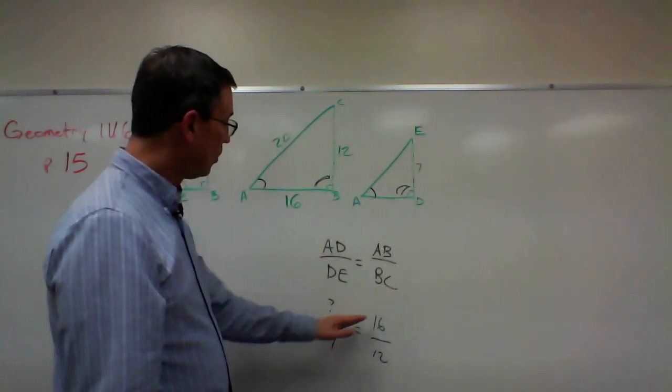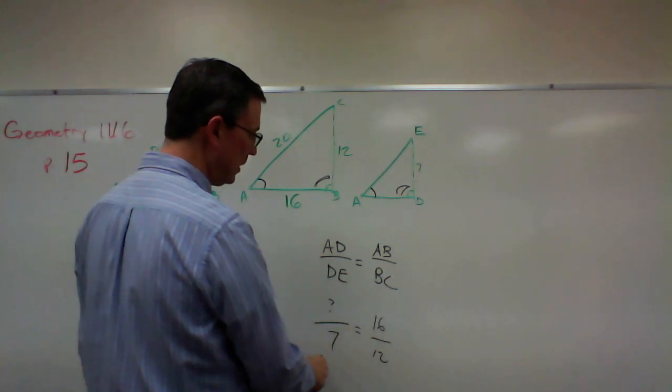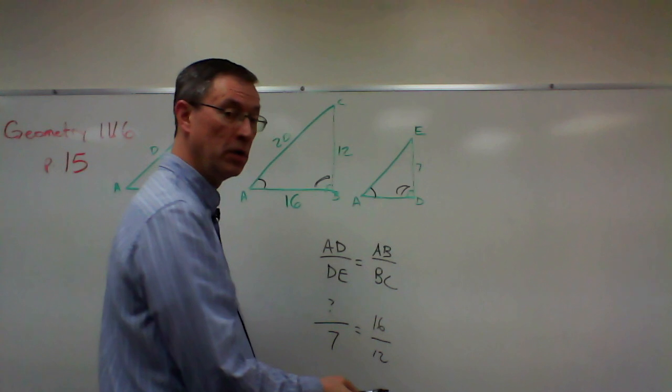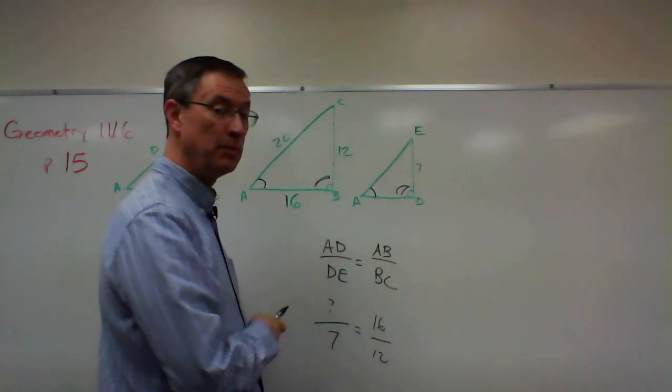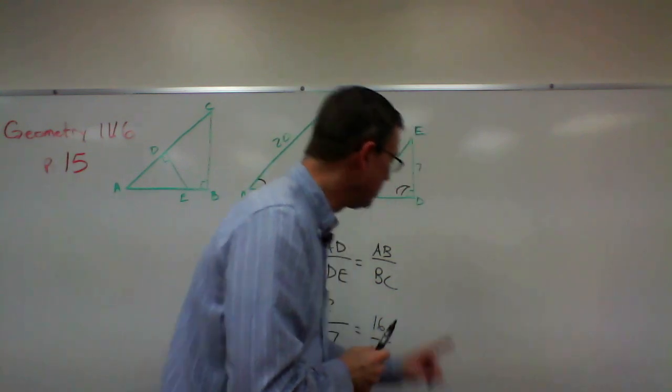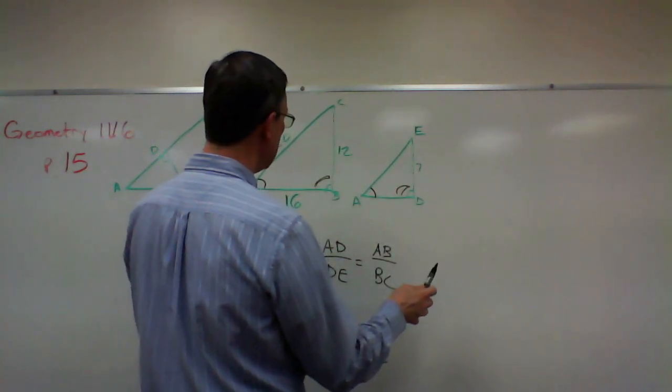Now to solve, we can just cross multiply and say 16 times 7 equals 12 times this unknown number, and then we'll just divide both sides by 12. I'm not going to solve that one for you, but I do want to show you that if I set it up slightly differently—remember there's four ways we can set up any ratio.